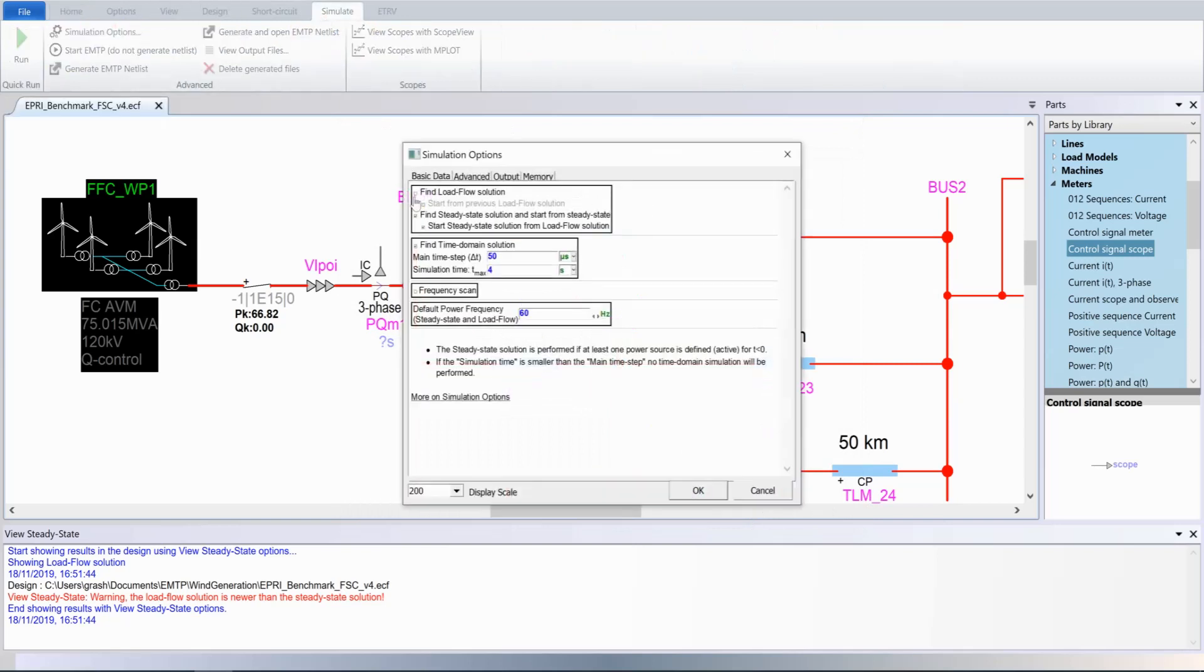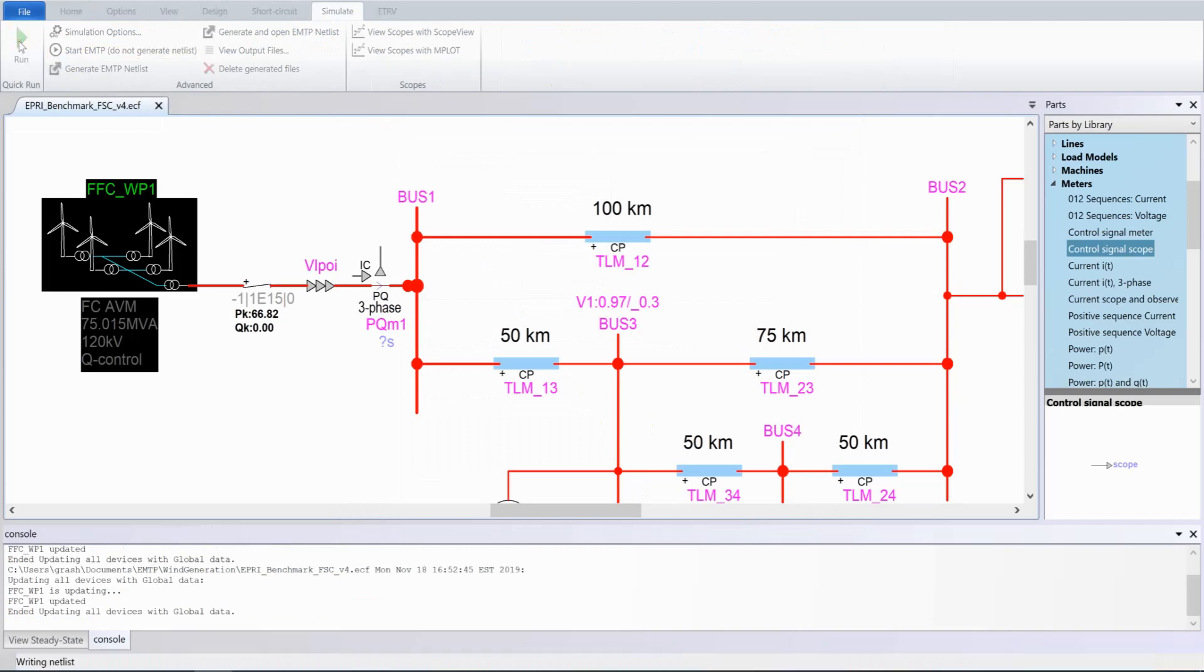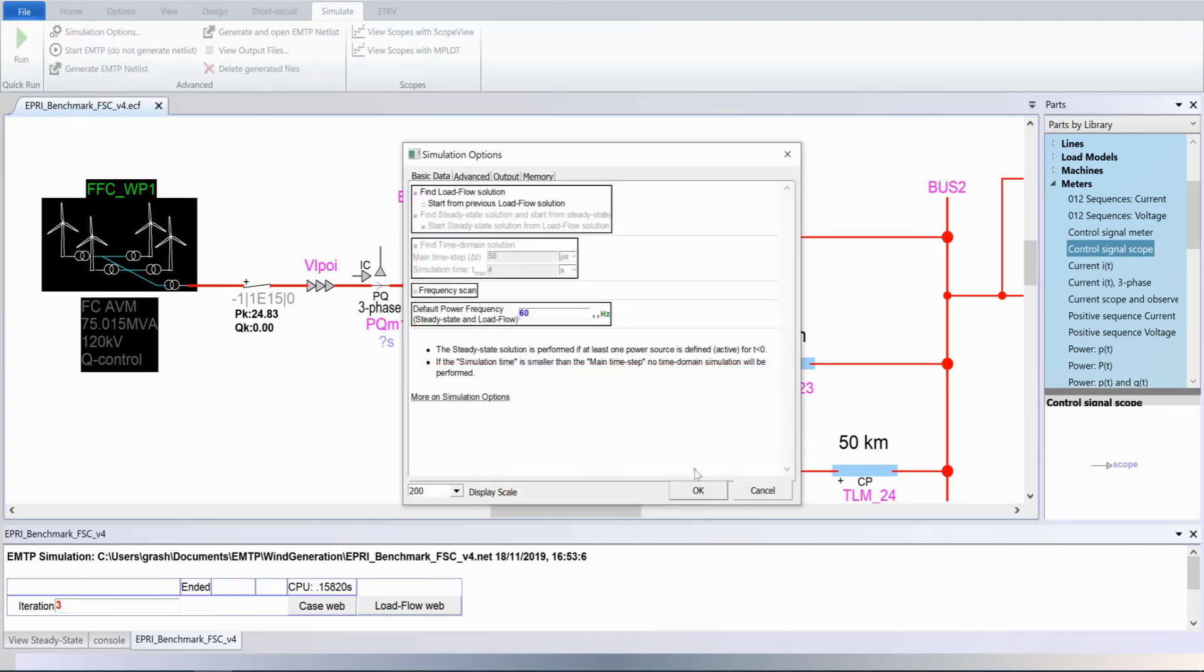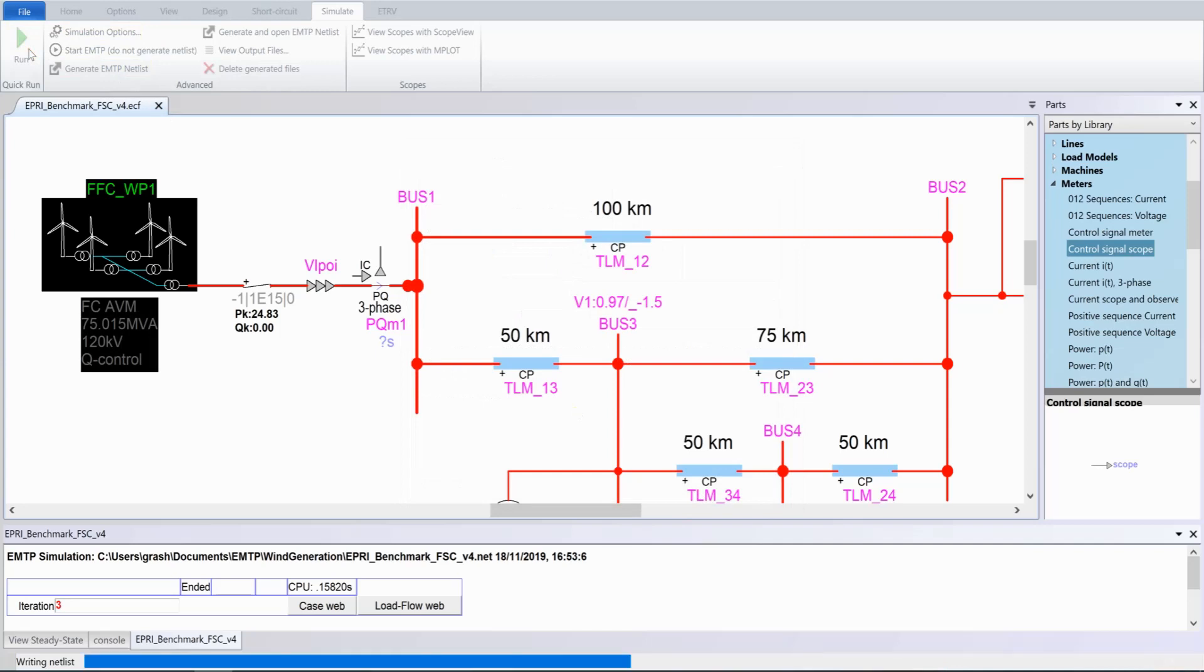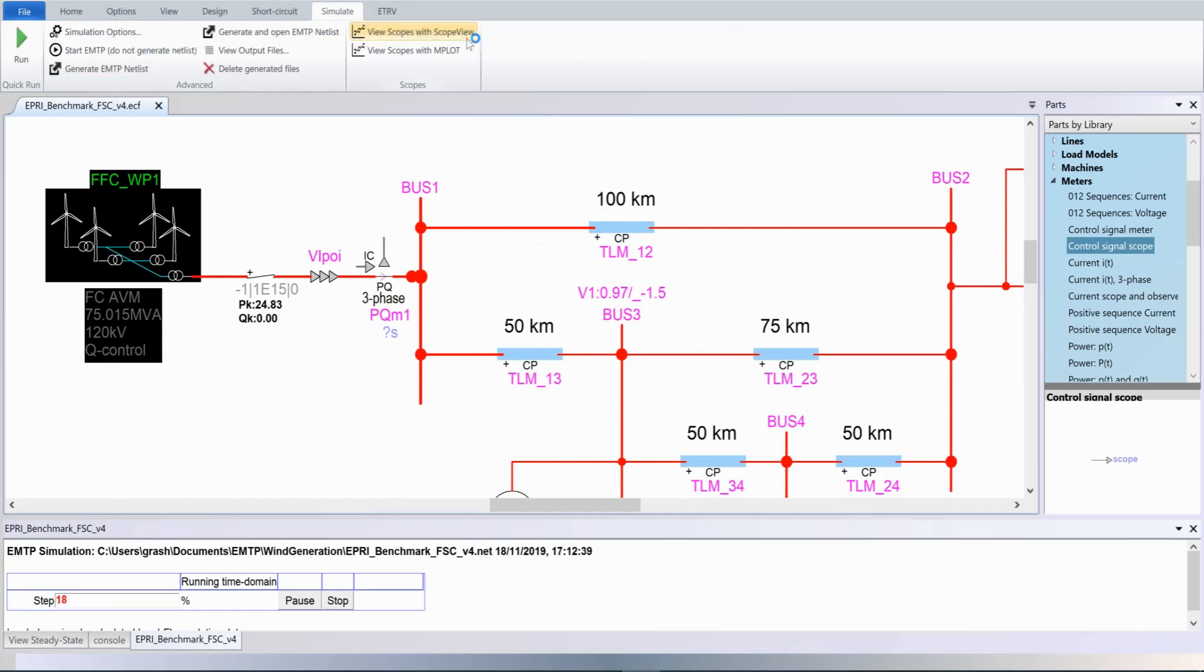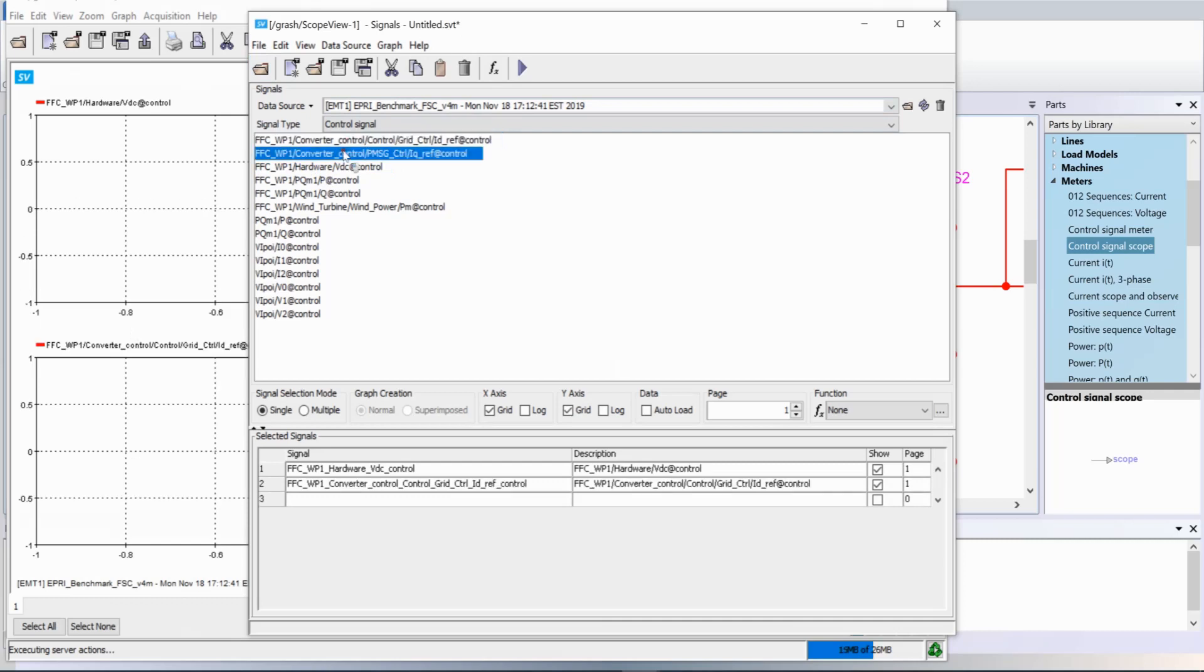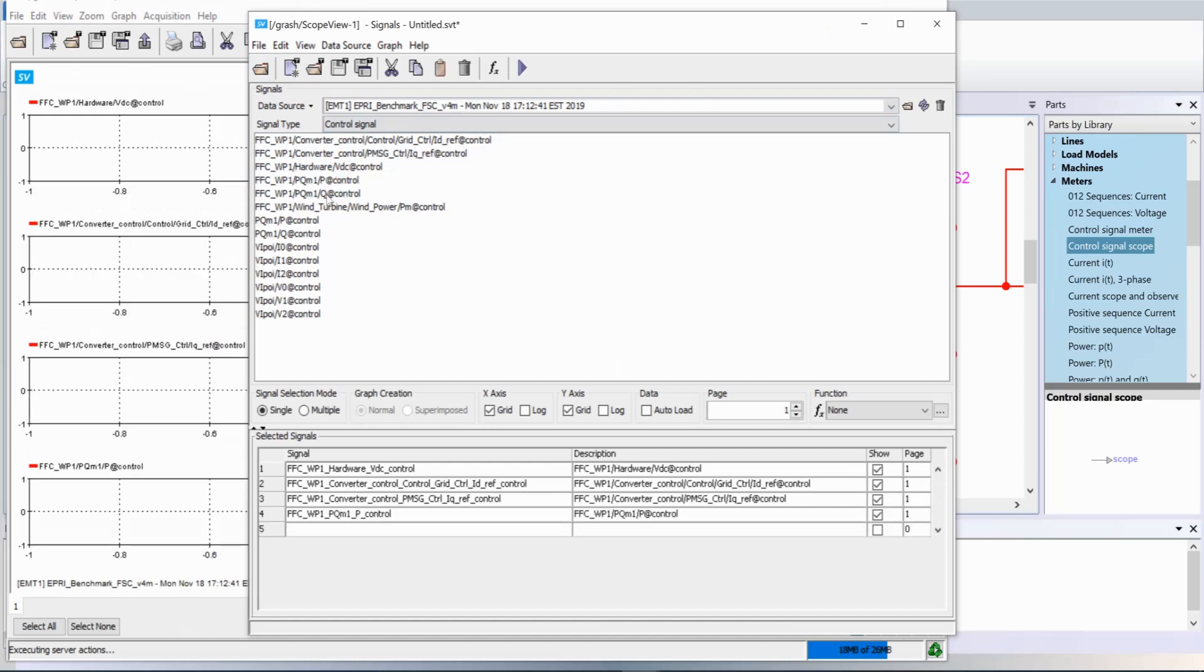We start by running the load flow. Here we can see the initial power from the wind park, which has been modified when we modified the initial wind speed. Let's now run the time domain simulation and visualize the wind step. To visualize the result, let's use scope view. On the first scope, we will look at the DC voltage. On the second one, we will look at the D and Q axis references. And finally, the park total power.